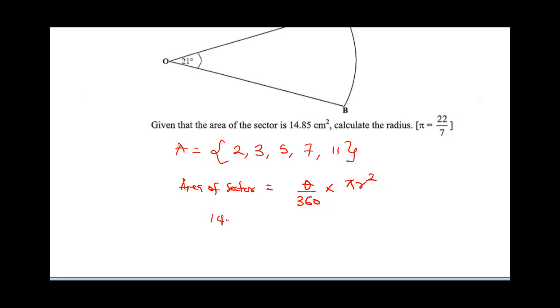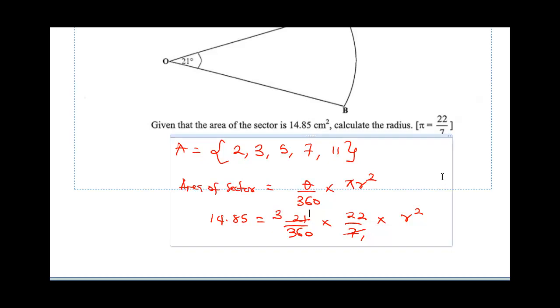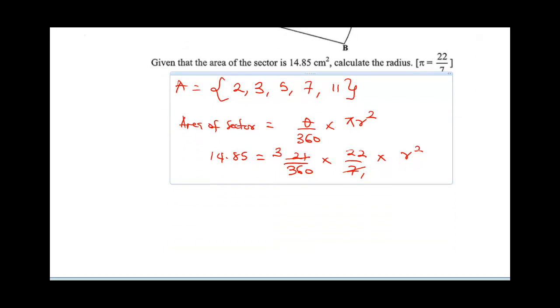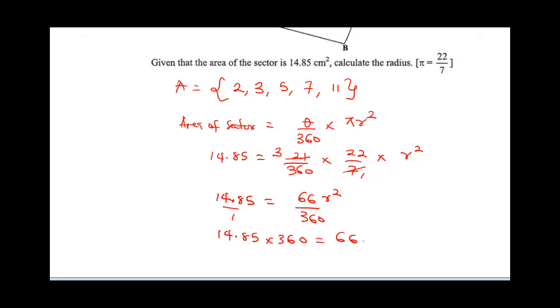We've been given the area of the sector as 14.85 equals 21 over 360 times pi, 22 over 7, times r squared. We'll have 14.85 is equal to 66 over 360 r squared. Cross-multiply, this is going to be 14.85 times 360 is equal to 66 r squared.